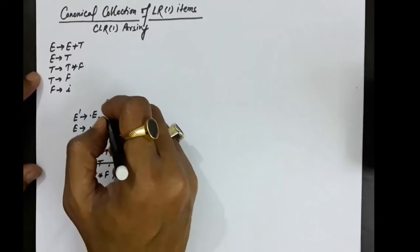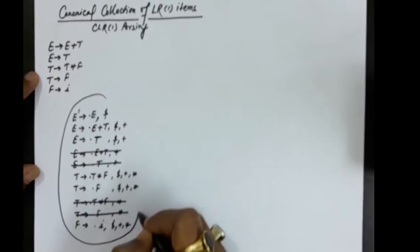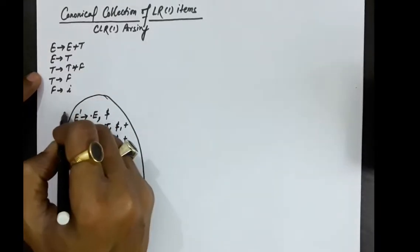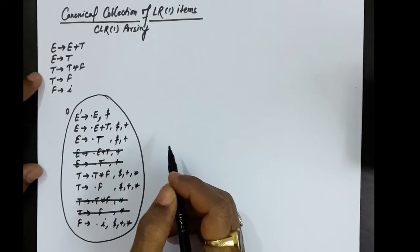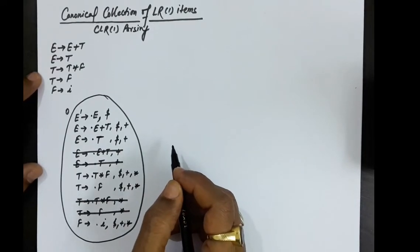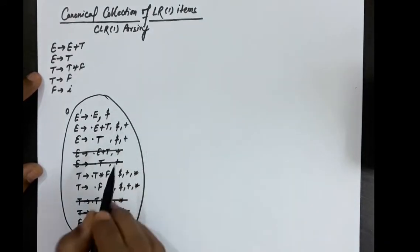After this, we write all productions starting with F. So F produces dot i with lookaheads dollar, plus, and multiplication sign. This completes state I0.